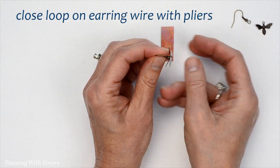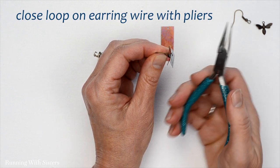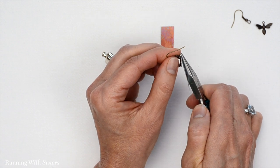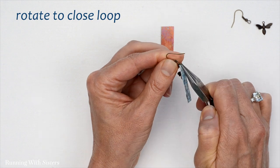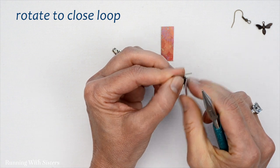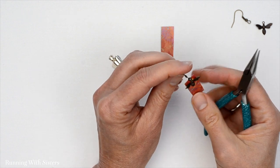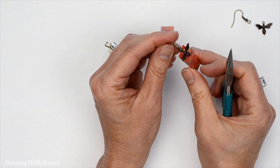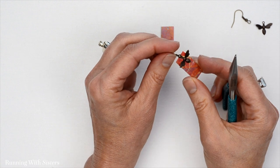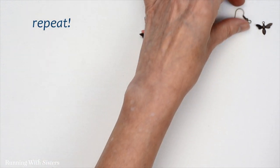I'm going to do it the same way I did before. I'm going to use my chain nose pliers. I'm going to just basically rotate that loop closed on the earring wire like that. So there's one of our earrings, very cute. It's got a little movement to it, very fun. And now I'll do the other one.